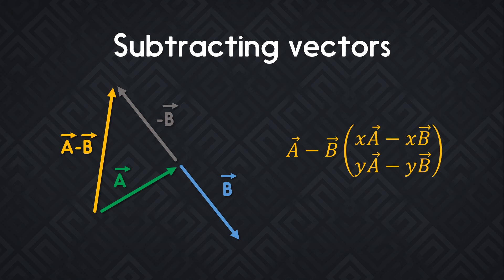So if you subtract B to A, you get a vector pointing up, not pointing further down. And on the right side, you can see how it's similar to adding two vectors together, but instead of adding the coordinates, we just subtract them.